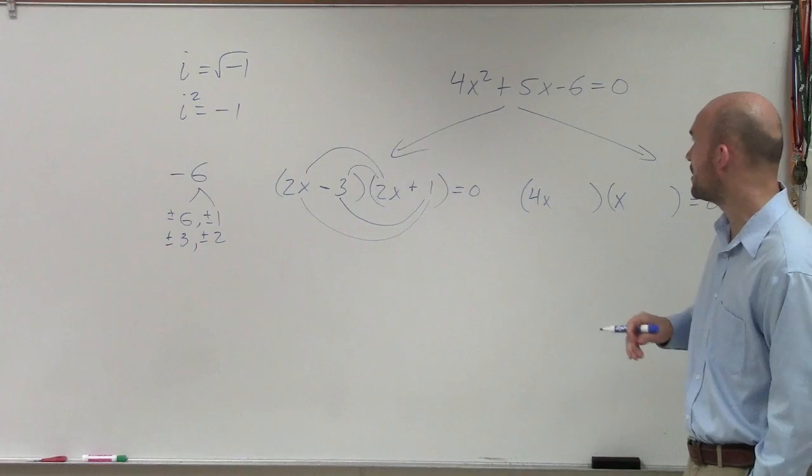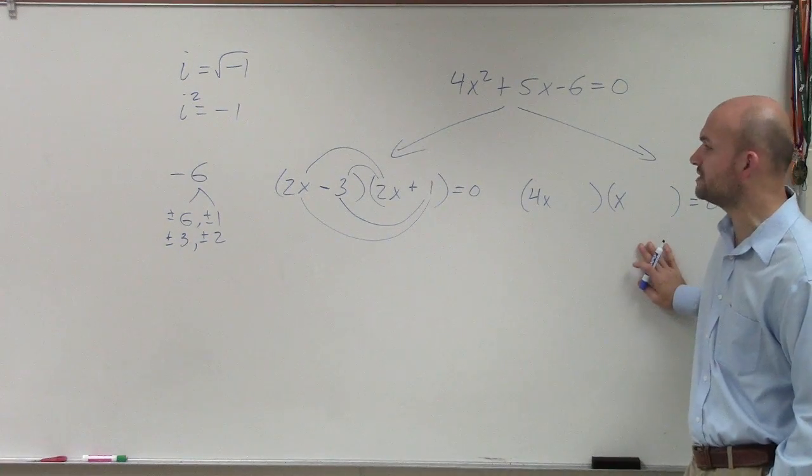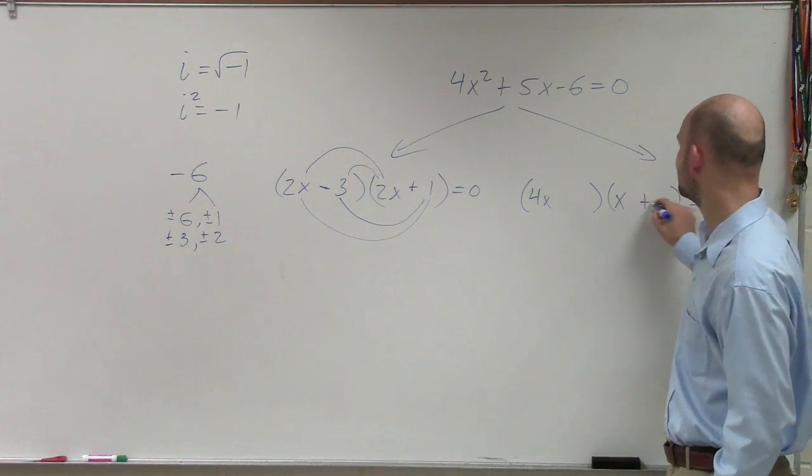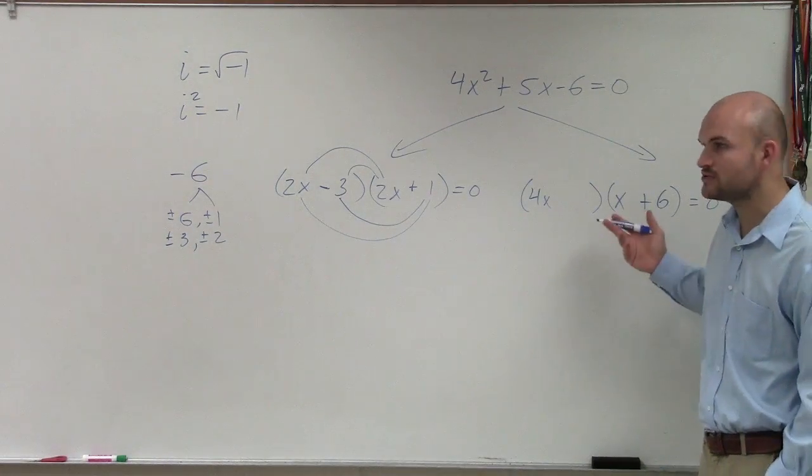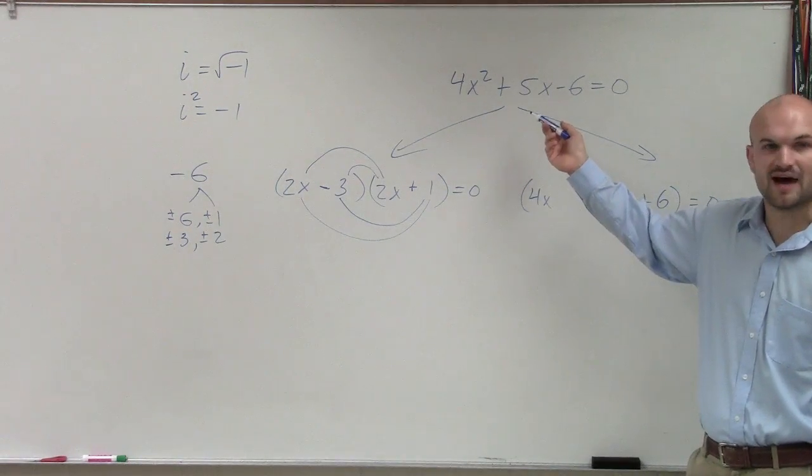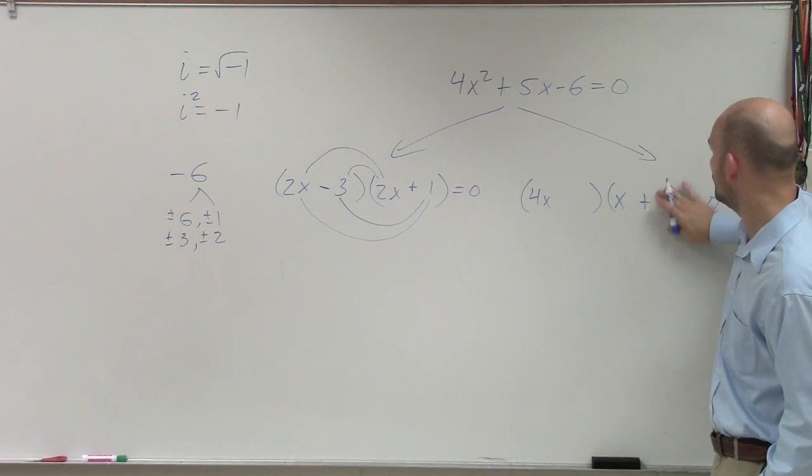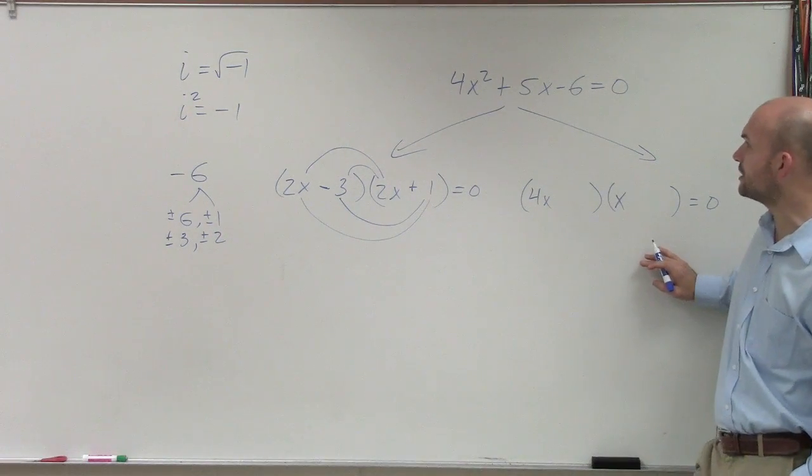However, when I go over to this problem, I look at this and I see, what numbers can I put? I don't want to put a 6 here, because what's 4x times 6? That's 24. That's going to be way too hard to get to 5, right? So I know that either I can work with a 3 or a 2.